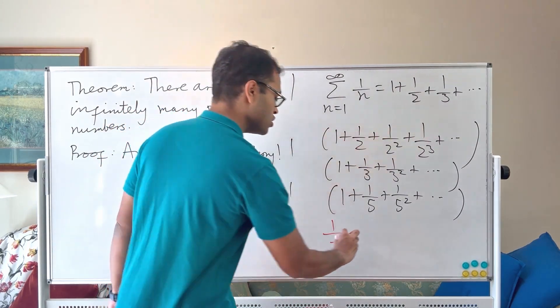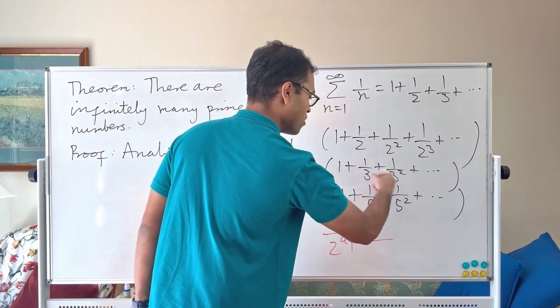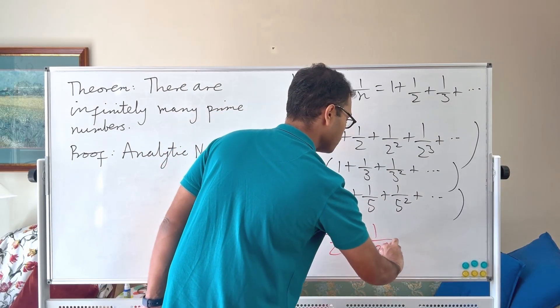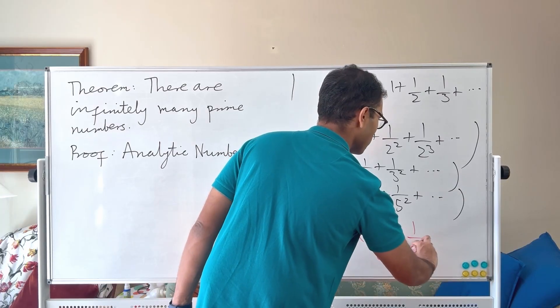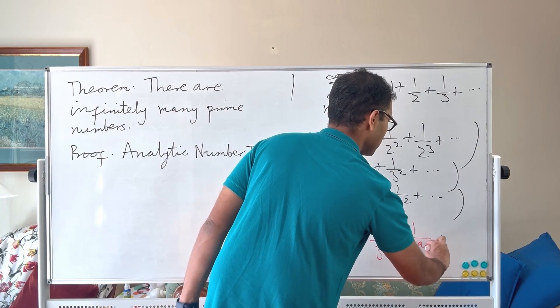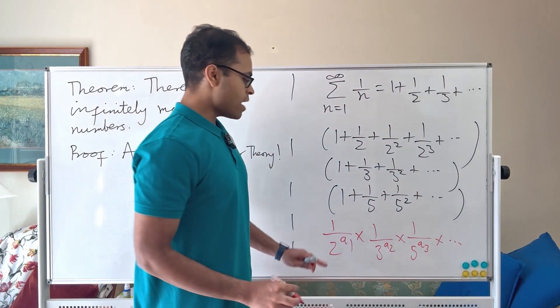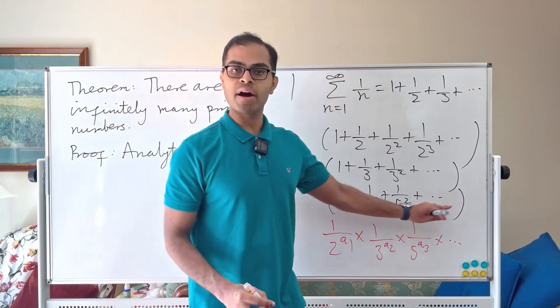You're then going to multiply it with a power of 1 over 3. 1 over 3 power A2. You're going to multiply that with a power of 1 over 5. 1 over 5 power A3 etc. So you're going to multiply out reciprocals of powers of prime numbers.